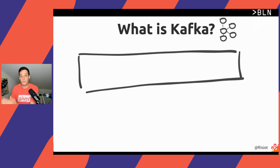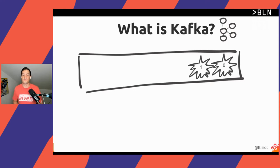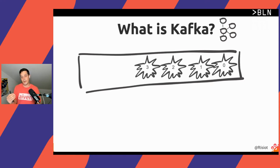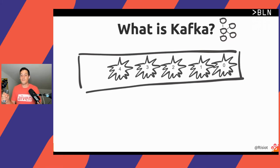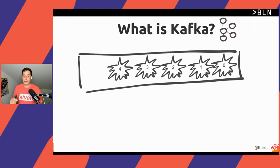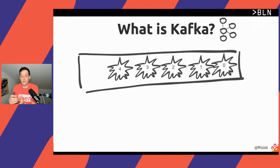Event number zero happens and we store it in the log. Event number one happens and we store it, two, three, and four. Even more, Kafka is a log which is append-only and immutable. This means that we can write only at the end of the log.